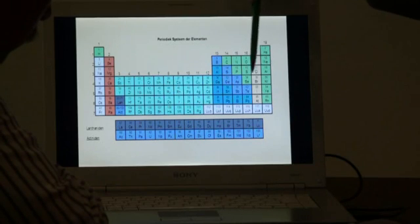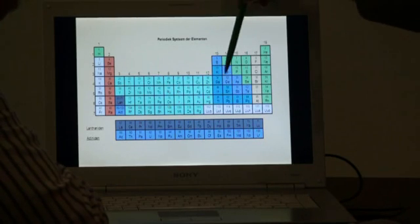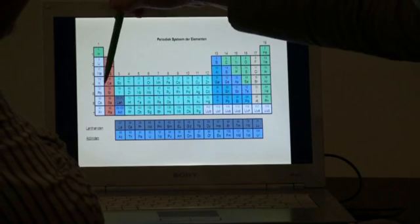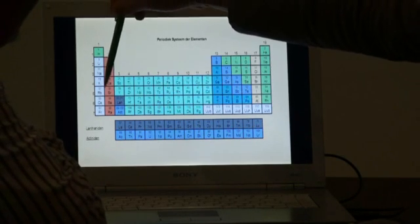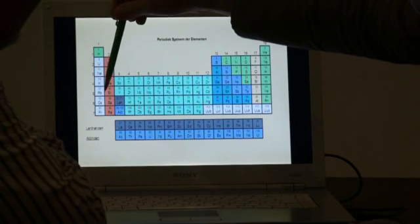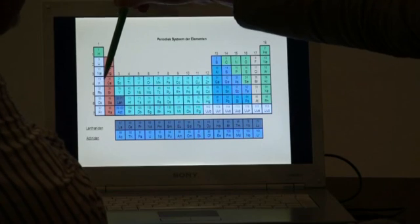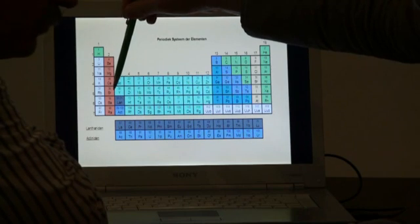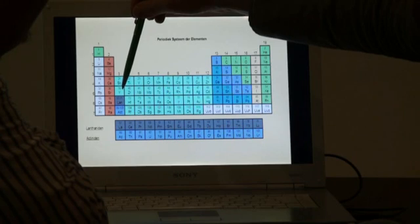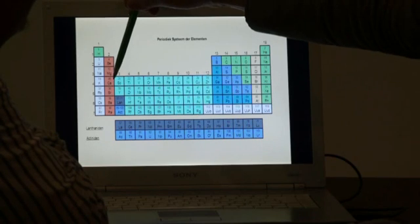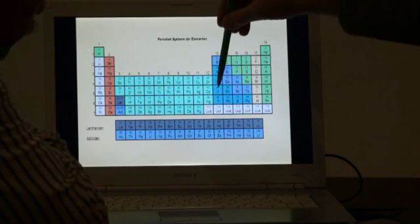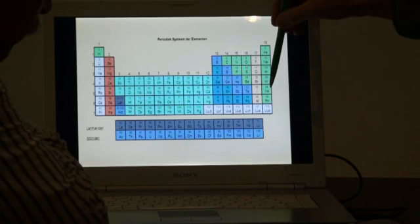The same in the silver series, starting with rubidium. A fifth electron shell, one electron in the outer shell. Strontium, two electrons in the outer shell. Yttrium has the electron in the shell below the fifth shell until indium. Then the outer electron shell fills up.